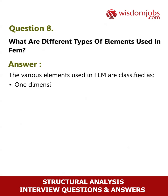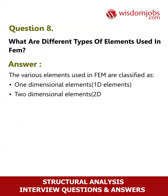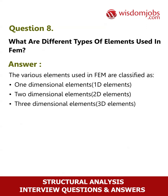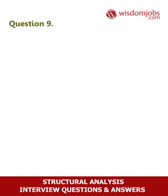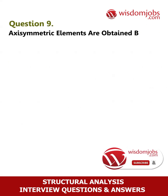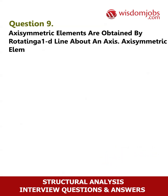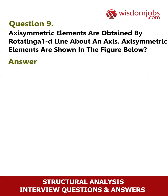Question 8: What are the different types of elements used in FEM? Answer: The various elements used in FEM are classified as 1-dimensional elements (1D elements), 2-dimensional elements (2D elements), 3-dimensional elements (3D elements), and axisymmetric elements, which are obtained by rotating a 1D line about an axis.